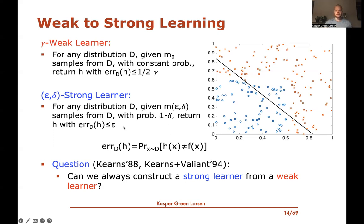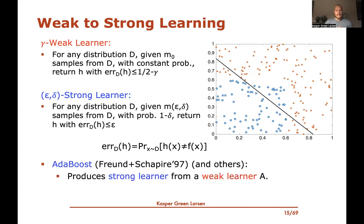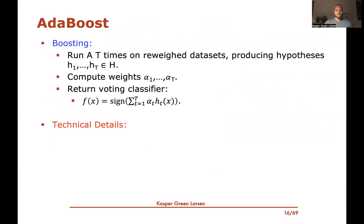This question was answered affirmatively. One famous algorithm that turns a weak learner into a strong learner is AdaBoost, by Freund and Schapire from 1997. It takes a γ-weak learner and produces an (ε,δ)-strong learner. The basic idea is to run the weak learner multiple times on reweighted versions of the training data, producing hypotheses h₁ through hT, then combine them as a weighted vote: sign(Σ αₜ hₜ(x)).